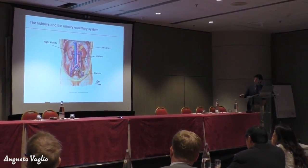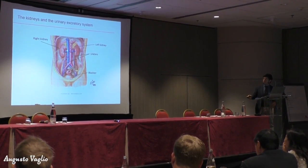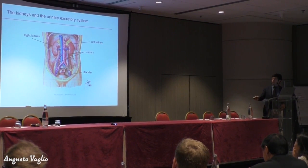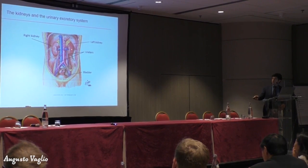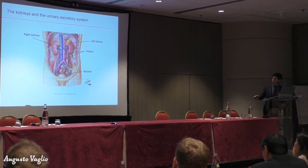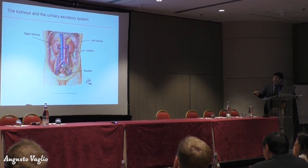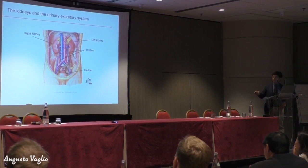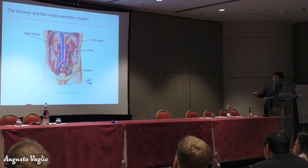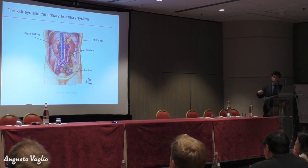The blood goes to the kidneys, it is filtered in the kidneys and then returns through the veins — these are the two renal veins that take the blood to the inferior vena cava. The blood is filtered through the kidneys and becomes urine, and the urine is collected by the urinary system made of the renal pelvis and the ureters. The ureters are these two tubes that take the urine to the bladder.